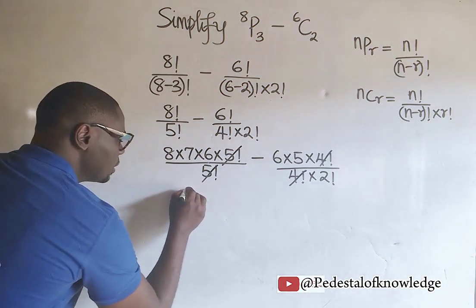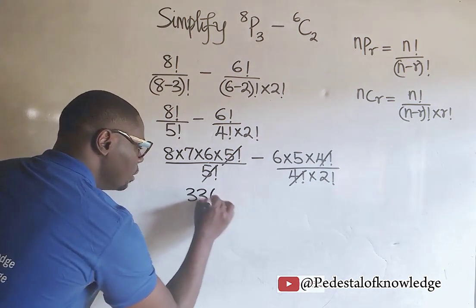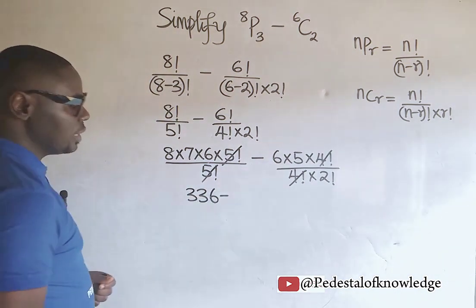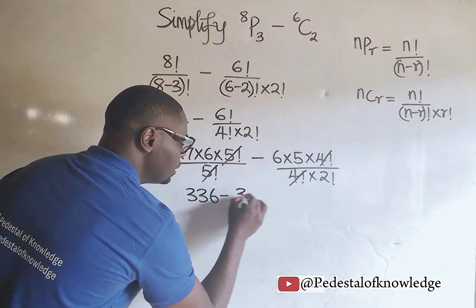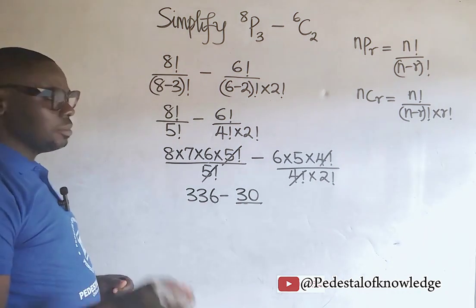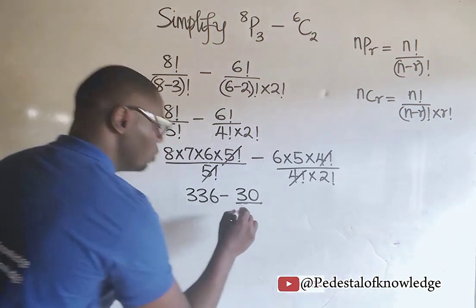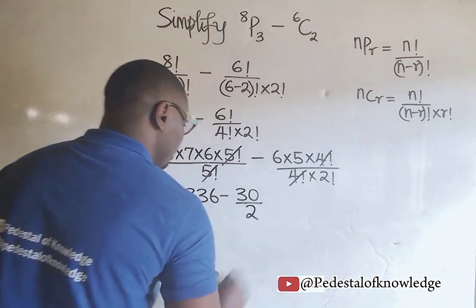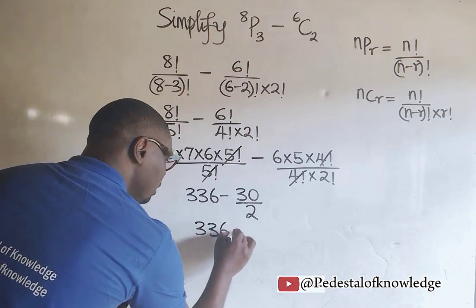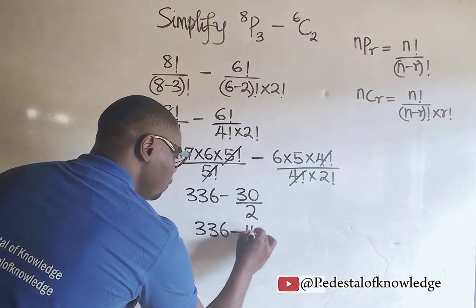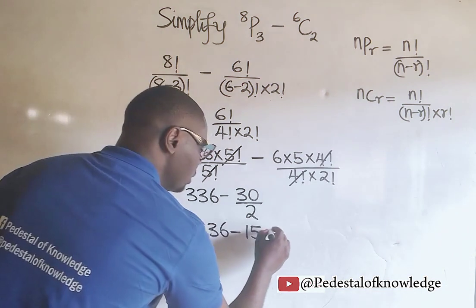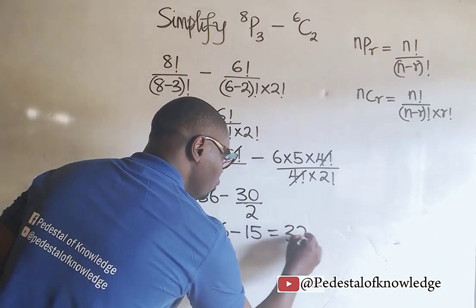So we are going to have 336 minus... Now, 6 times 5 is equal to 30. So we have 30 divided by 2 factorial, which is equal to 2 times 1, which equals 2. This gives us 336 minus 30 over 2, which is 15. And 336 minus 15 will give us 321.